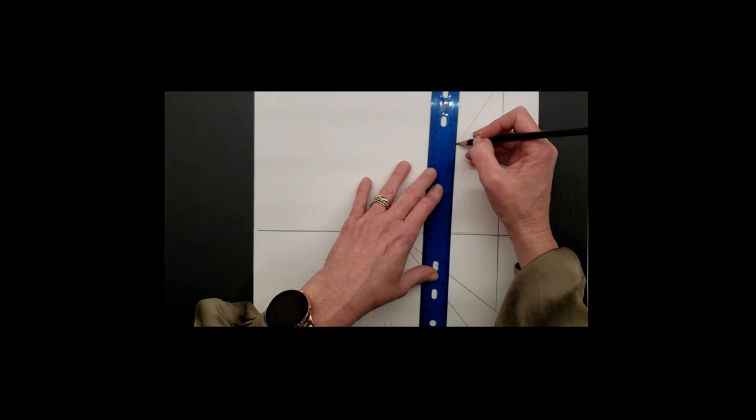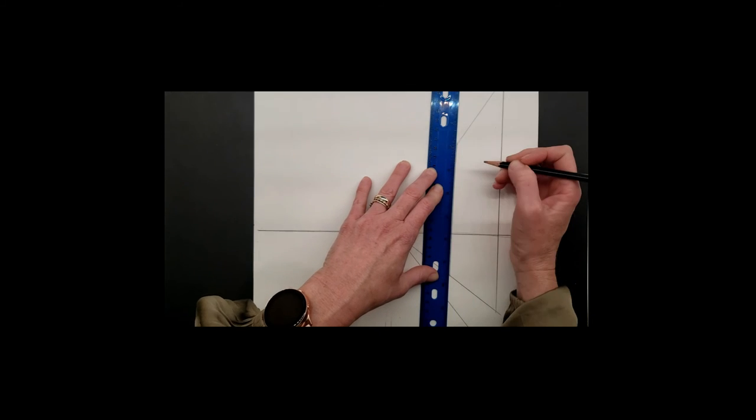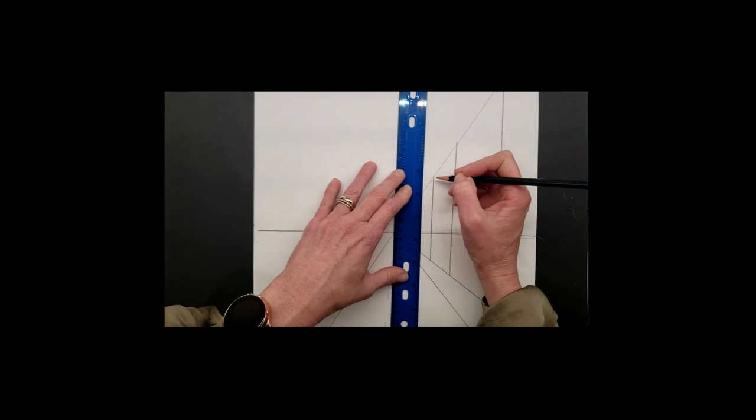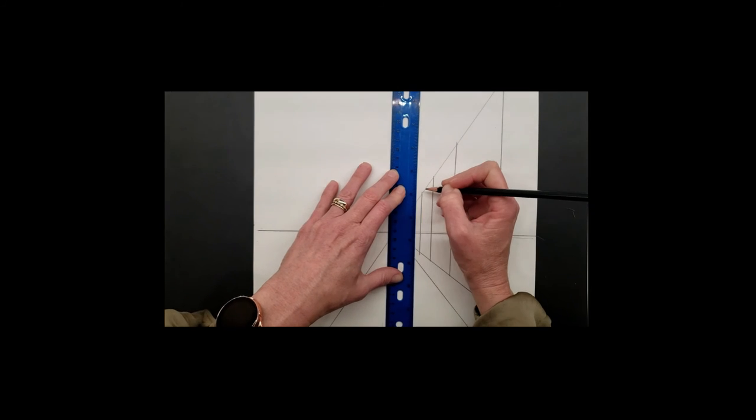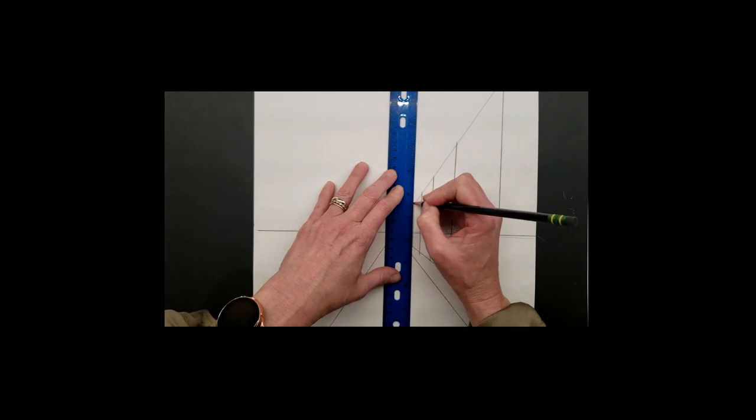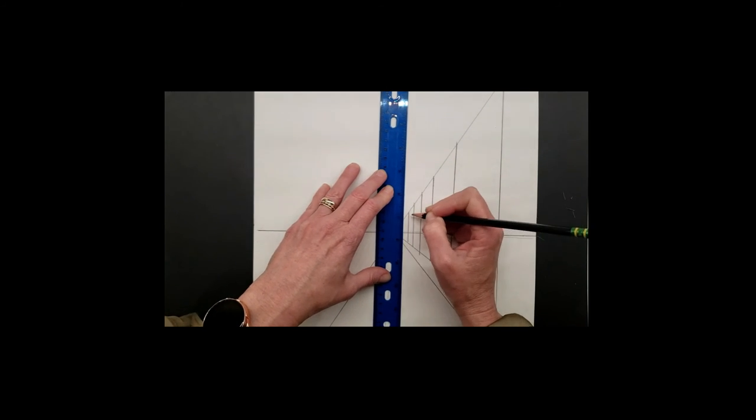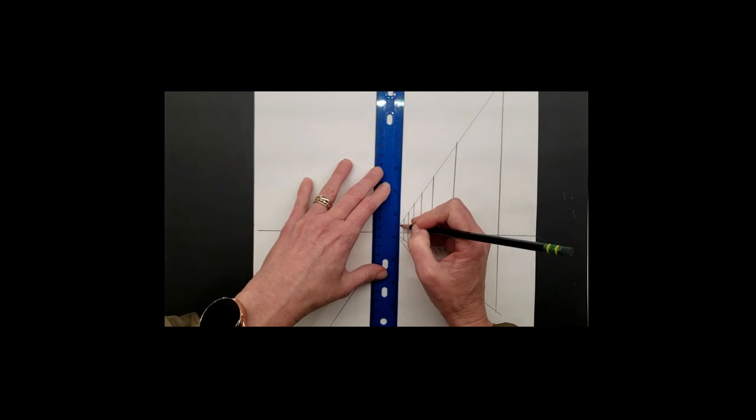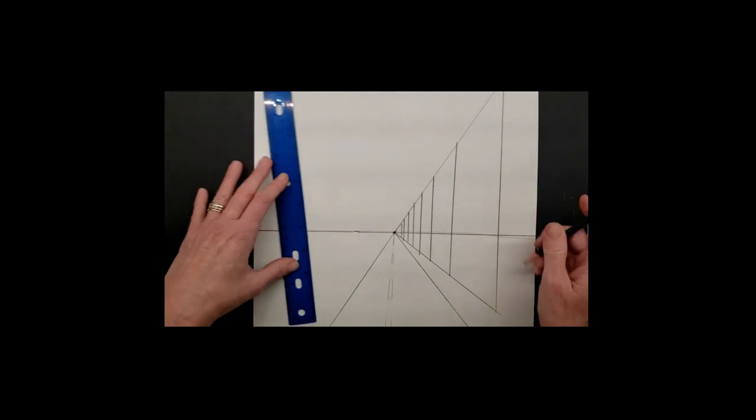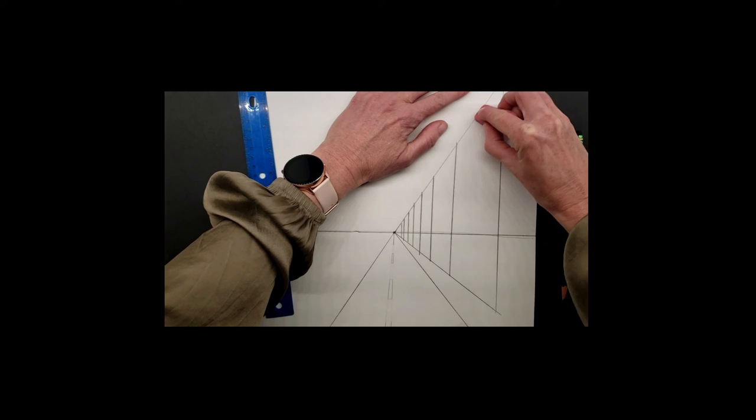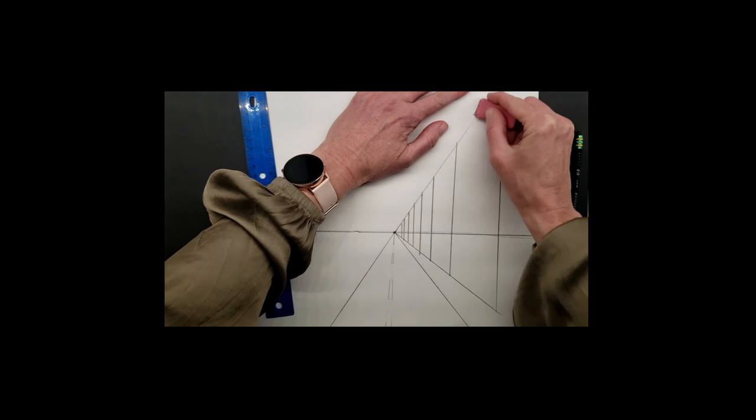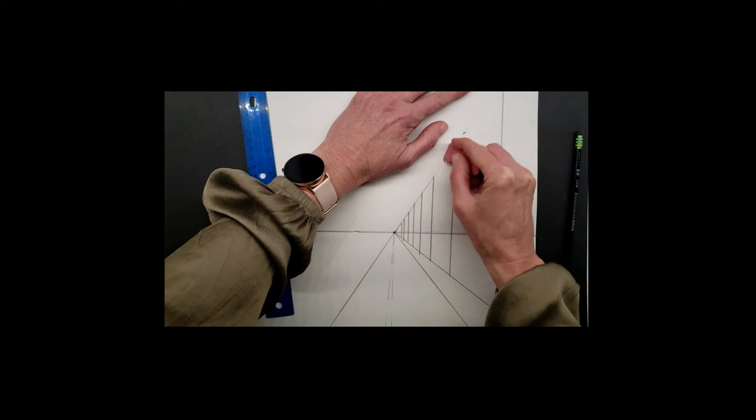Draw your first telephone pole closest to you. It'll be the furthest on the side of your paper. You're going to skip a good bit of space and draw your second one. As you continue to draw your telephone poles, they're going to look as if they're getting closer together. We know in real life they're not, but in perspective, it looks like they get smaller and closer together as they get down the horizon line.